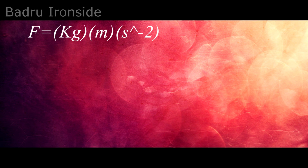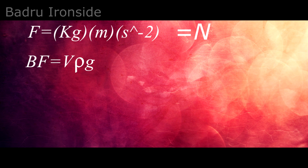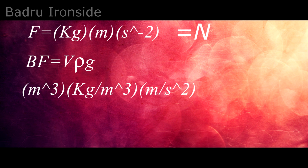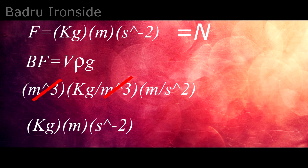Forces are expressed in kilograms times meters times seconds to the negative two — we call this term a Newton. The buoyant force has the formula V·ρ·g, that is volume times density times little g. Notice the term small g: g is the acceleration due to gravity. So buoyant force needs gravity to even make it a force. In units, this becomes meters cubed times kilograms per meters cubed times meters per second squared. The meters cubed cancel out, leaving kilogram times meters times second to the negative two — the Newton annotation, which corresponds with physics.